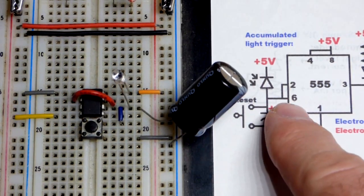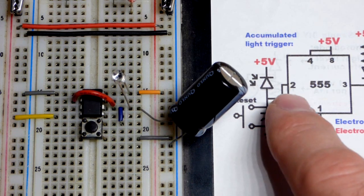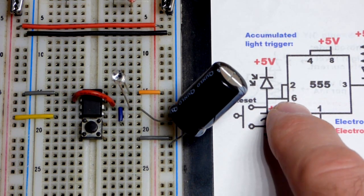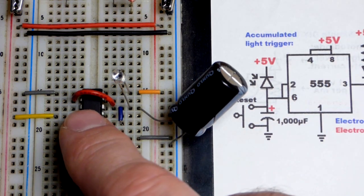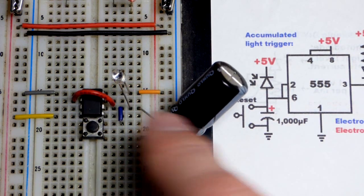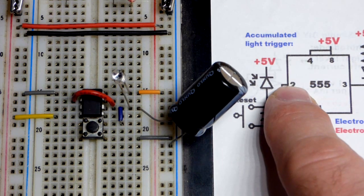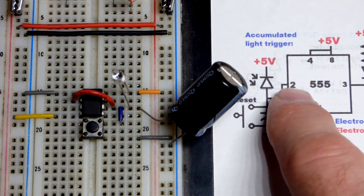And so it charges when it gets to 2/3 of the supply voltage. Pin 6 sees that and it sets the output low. When we press the button, that discharges it. Less than 1/3 of the supply voltage, pin number 2 sets the output high.